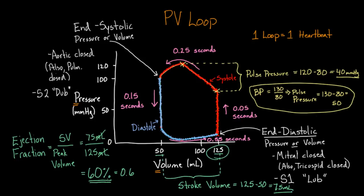So from these PV loops you can learn key terms like end-diastolic and end-systolic, and calculate things like pulse pressure, stroke volume, and ejection fraction. They give you a ton of information, which is why we always use them.